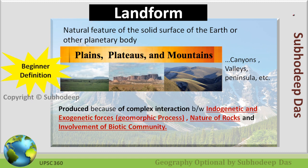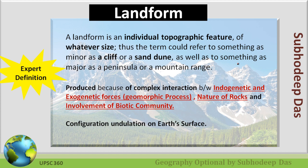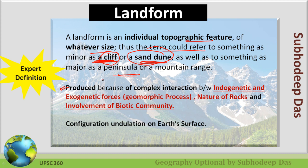Whatever definition we have seen is the beginner definition. If you need to write more technical, complex answers, you can use these keywords: a landform is an individual topographic feature of whatever size, and thus the term could refer to something as minor as a cliff or a sand dune. It is produced by the complex interaction between endogenic forces, exogenetic forces, nature of rock, and the involvement of the biotic community, which also plays a very important role in the formation of landform.